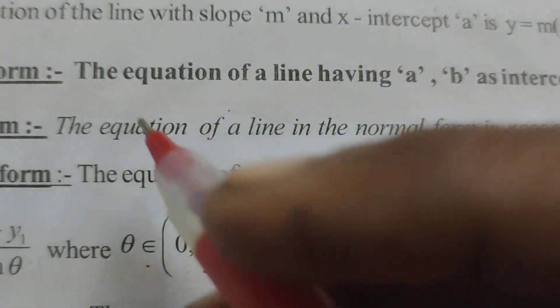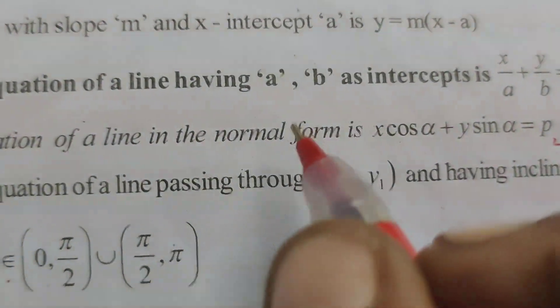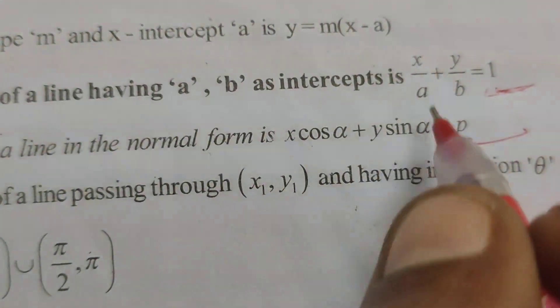I mean, intercept form of equation of line having A, B is X by A plus Y by B equals to 1.